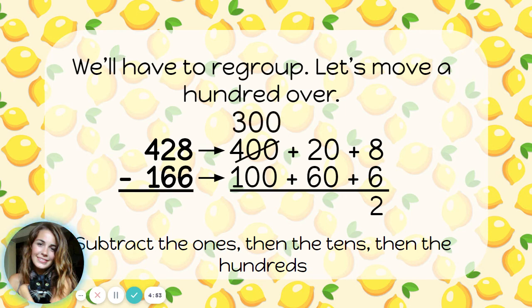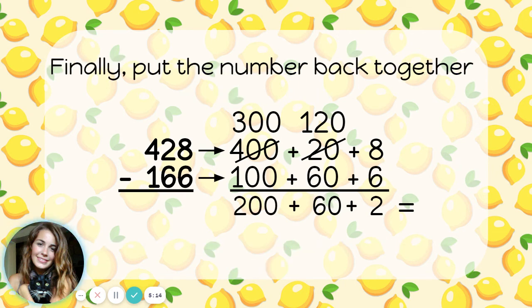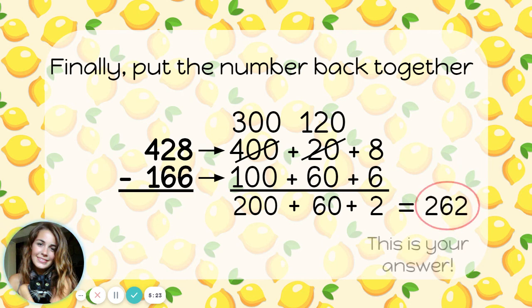So I will take away 100. I only have 300 left now in my top number, and I'll move it over to be with the 20. Now I have 120 there. Now I can subtract. 120 minus 60, I can do that. That's 60. And 300 minus 100 is 200. There's my answer. It's just in expanded form, so let's put it back together. 200 plus 60 plus 2 is 262, and that is the answer to my subtraction problem.